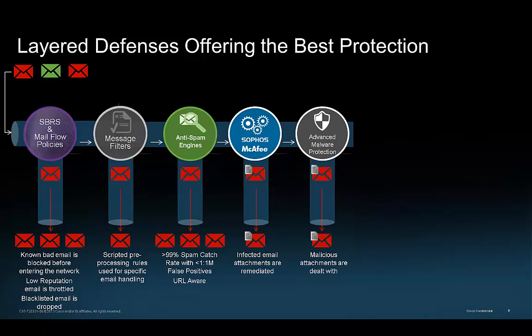Advanced Malware Protection uses a combination of file reputation and cloud-based sandboxing to detect custom malware and new malicious threats. It offers the unique capability of reporting on files that have evaded detection at the time of receipt but were later determined to be malicious.